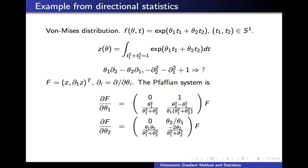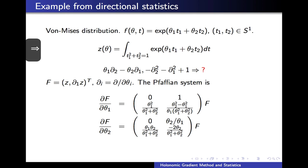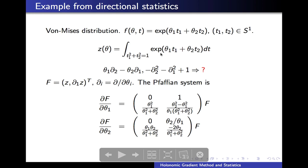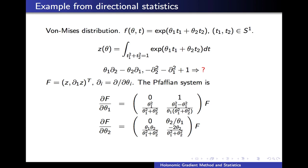We have given a quick introduction to what the holonomic gradient method is. Finally, let us solve a problem in directional statistics by the holonomic gradient method. This is called the unnormalized von Mises distribution on the unit circle. The normalizing constant is this integral. Let us perform the first step for finding the Pfaffian system. In this case, the Pfaffian system can be obtained easily by Oaku's algorithm, and consists of first-order ordinary differential equations for each direction. The gradient of this vector-valued function f is expressed in terms of f. Initial values can be obtained by a series expansion of this integral. We can get numerical approximate values of the normalizing constant by solving the differential equations numerically.